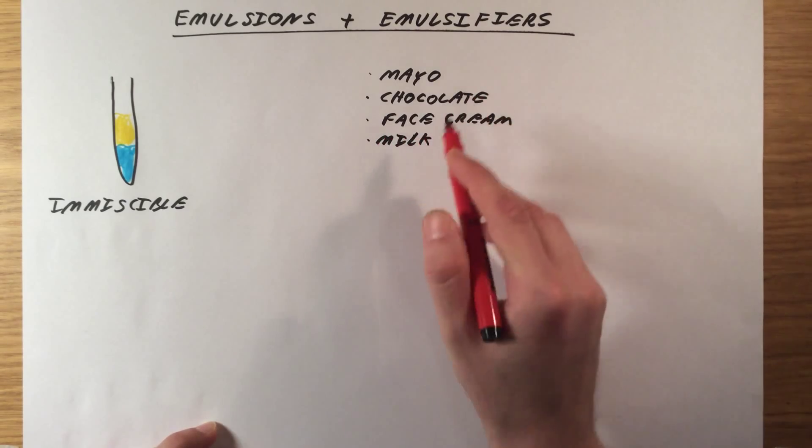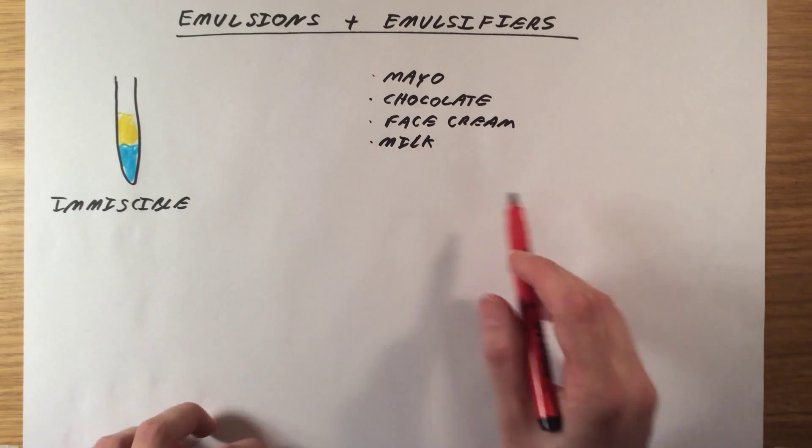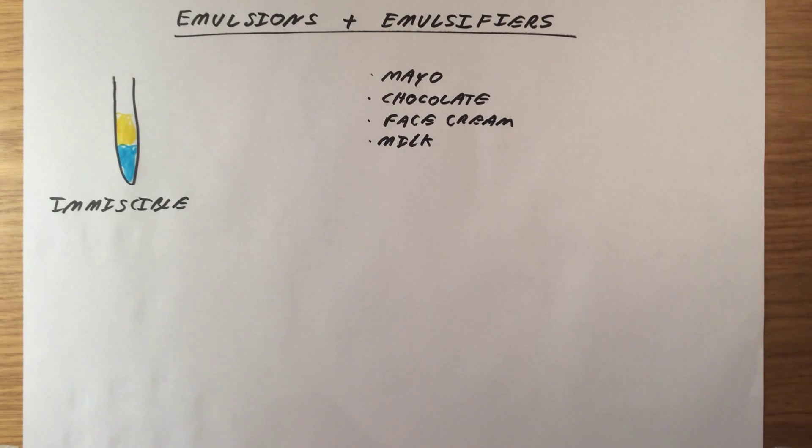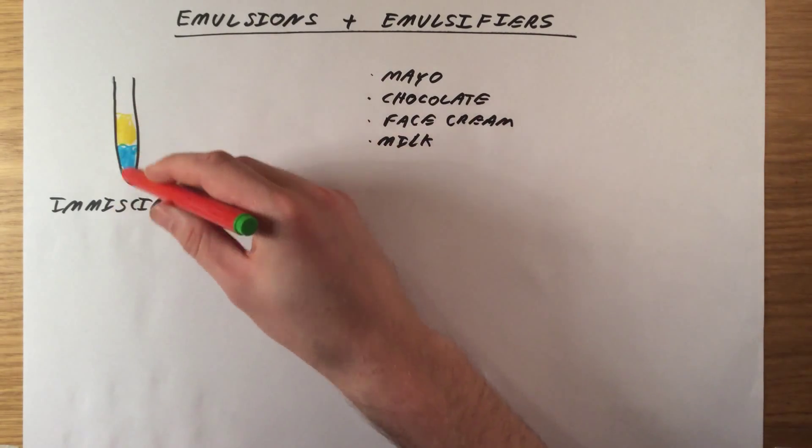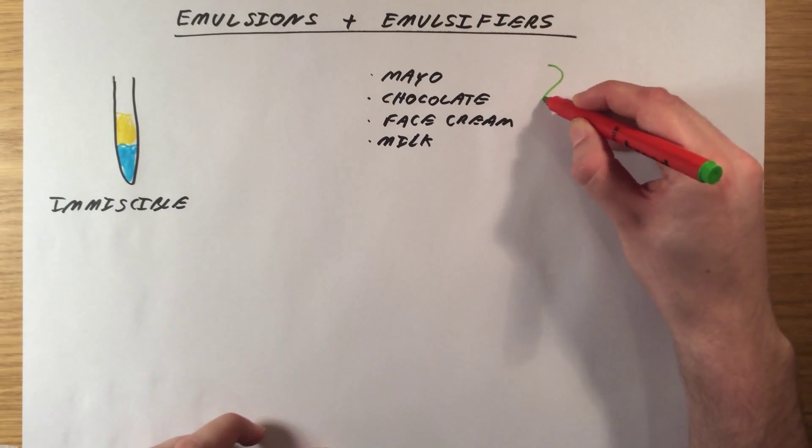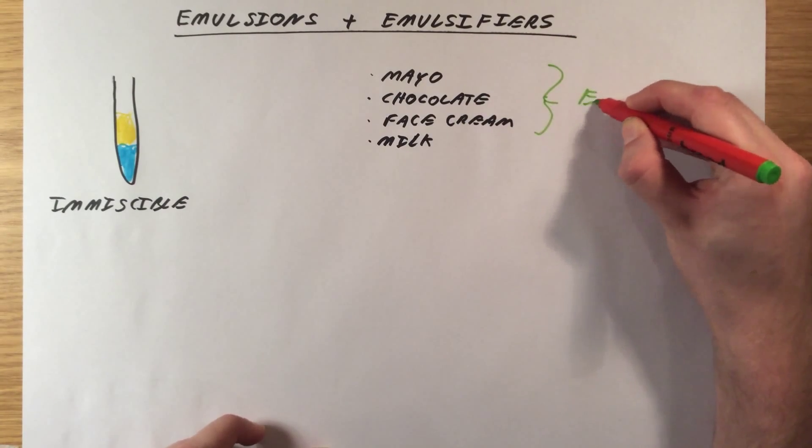In milk, you've got fats and protein molecules dispersed and mixed up with water. These are all examples of oils and water mixed together - these are all examples of emulsions.